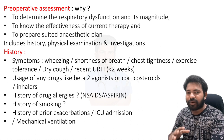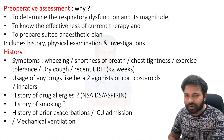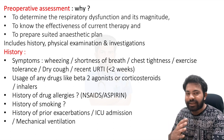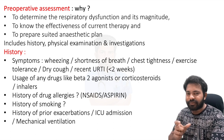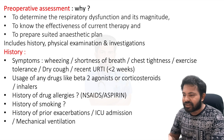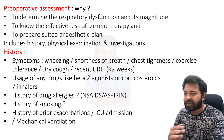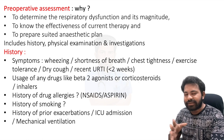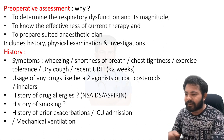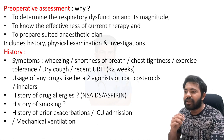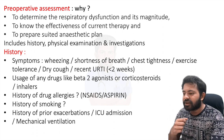In history, you will ask about symptoms like wheezing, shortness of breath, chest tightness, exercise tolerance, dry cough, and any recent respiratory tract infection — 'recent' meaning within two weeks. Also ask about drugs like beta-2 agonists, corticosteroids, or inhalers; drug allergies such as NSAIDs or aspirin; smoking history; prior exacerbations or ICU admissions for bronchospastic episodes; and history of mechanical ventilation.